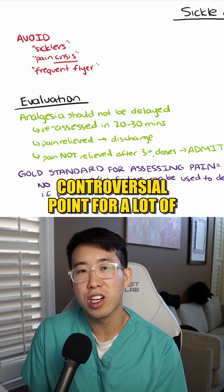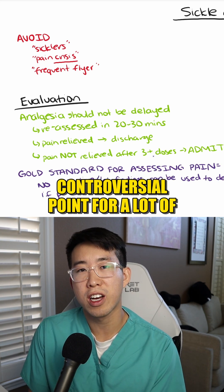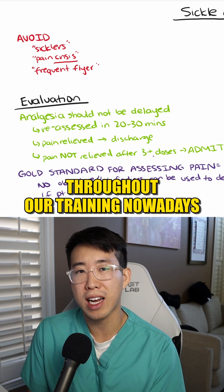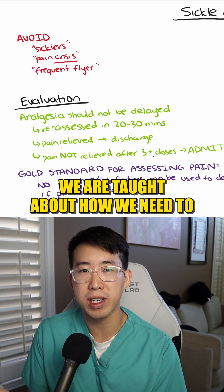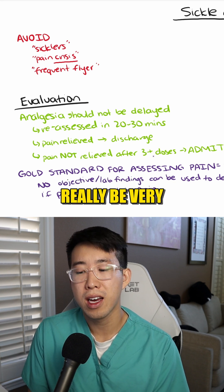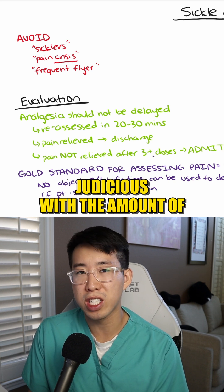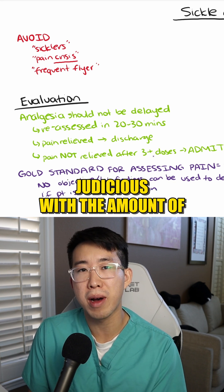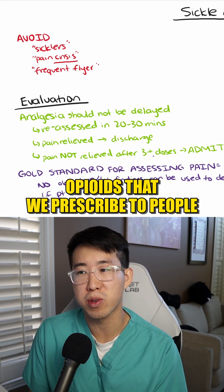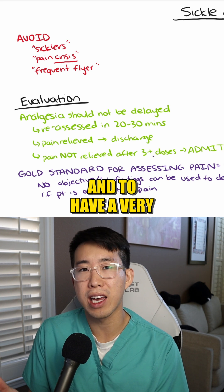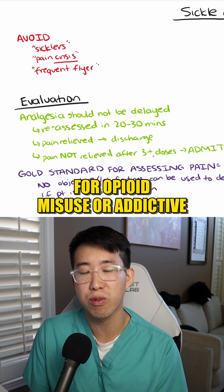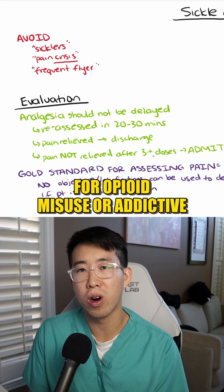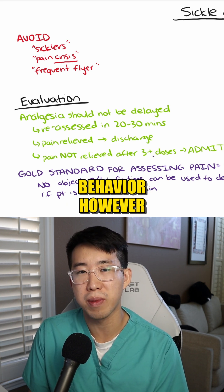This is a very controversial point for a lot of people because all throughout our training nowadays, we are taught about how we need to be very judicious with the amount of opioids that we prescribe to people and to have a very high index of suspicion for opioid misuse or addictive behavior.